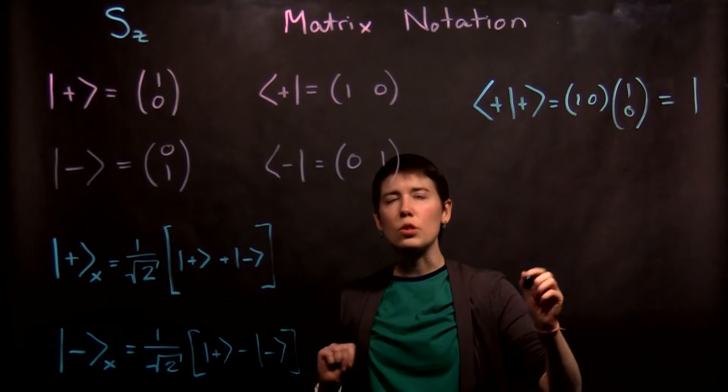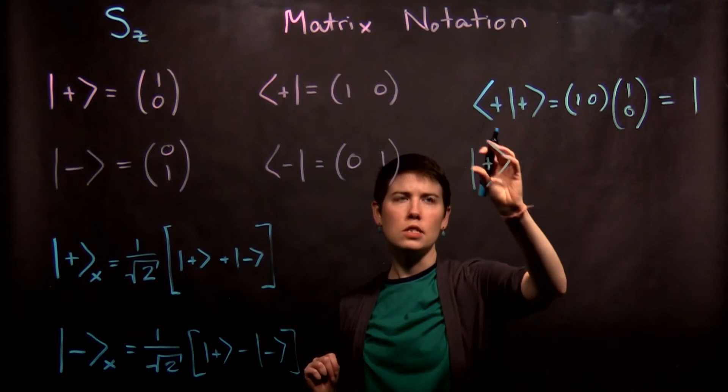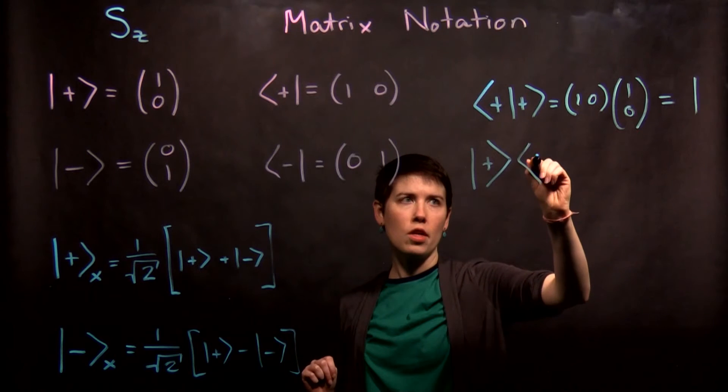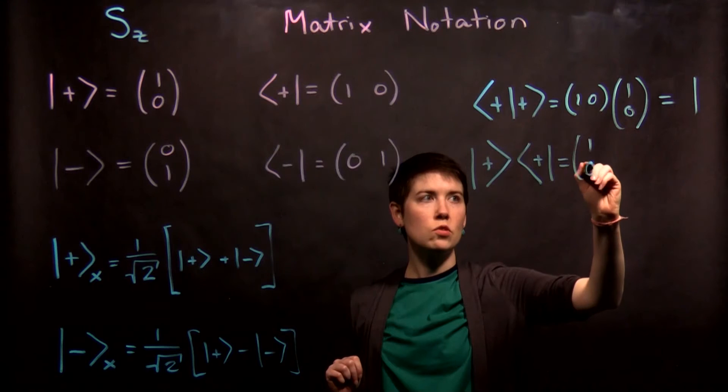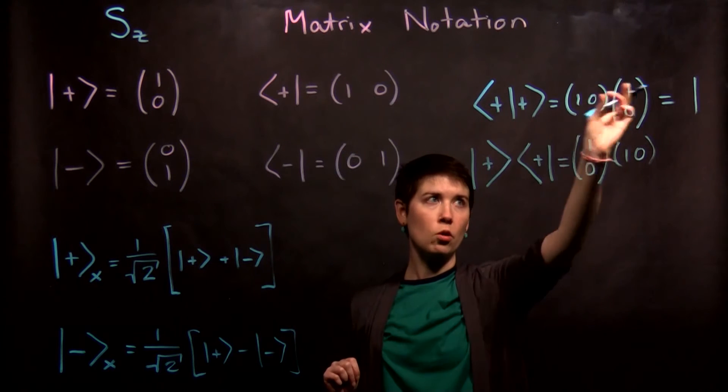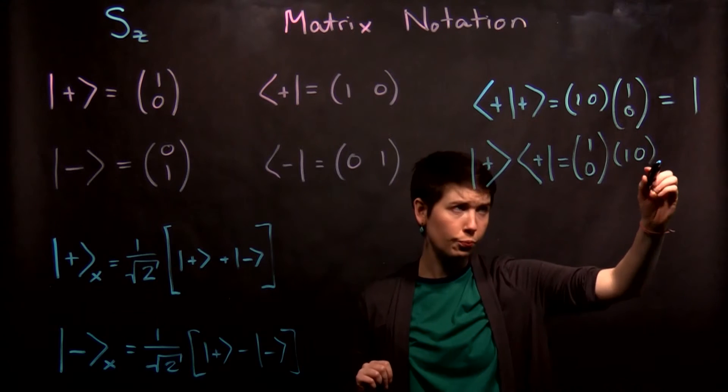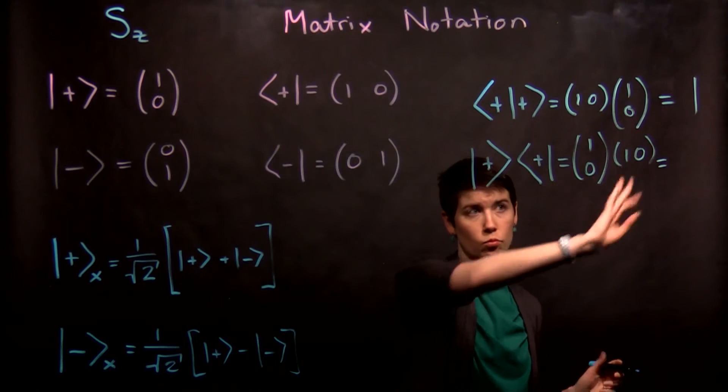Now what if we actually went—and this is looking ahead a little bit—and went in the wrong order. We did our ket and then our bra. So that's actually going to flip these. We have one zero, and then one zero. But notice this went row, column, and now this is column row.